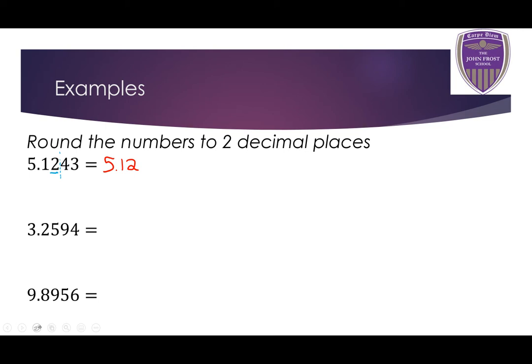Second example: 3.2594. The number in the second decimal place is the 5, so I draw a line after it. The number after the 5 is a 9, so that is going to make it round up — but only the 5 is going to change. So 3.2594 to two decimal places is 3.26. The 5 has turned into a 6.